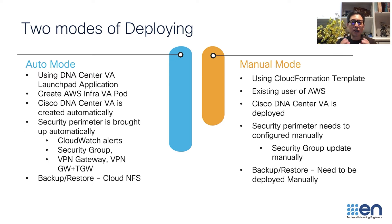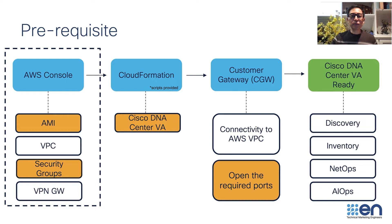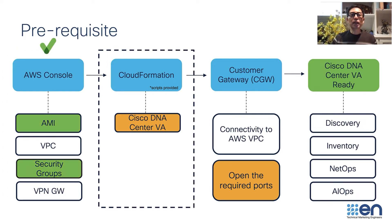Let's move to the demo. Before I go to the demo of Manual Mode, there are a few prerequisites that you would need. On your AWS console, you need to have AMI, the VPC, security group, and VPN gateway. Once you have that, you can use the CloudFormation script to create your Cisco DNA Center VA.